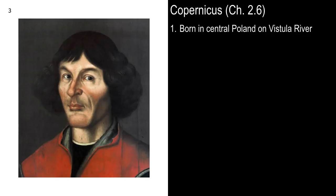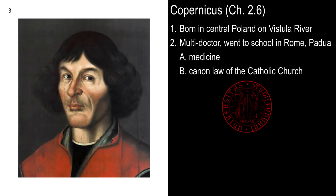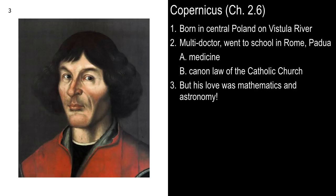Copernicus was born in Poland in a town halfway between Warsaw and the Baltic Sea on the Vistula River. He was from a fairly wealthy family, able to afford to go to school in Rome and Padua down in Italy. He got a couple of degrees at University of Padua, one in medicine and one in canon law of the Catholic Church. So he became an employee of the church up in Poland when he returned. But his first love was mathematics and astronomy. He was kind of a science nerd, I guess you could say.